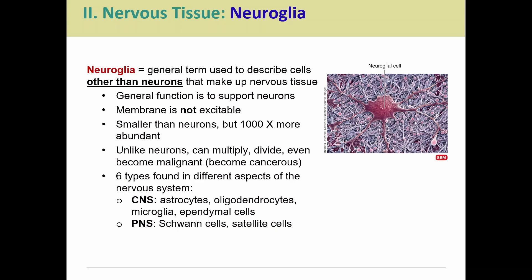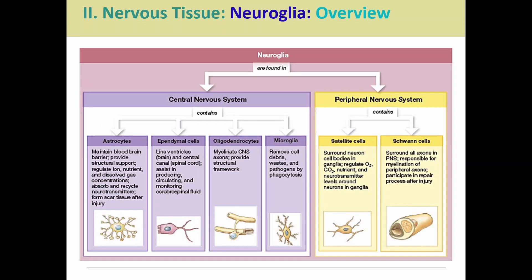We find six different types of neuroglia. In the central nervous system, we find astrocytes, oligodendrocytes, microglia, and ependymal cells. In the peripheral nervous system, we only see two: Schwann cells and satellite cells. Some of these cells are going to have similar general functions, but they are different from each other, which is why they have different names. Here's a little cheat sheet — if you want to pause here to look through and get an idea of what each cell does, you totally can.